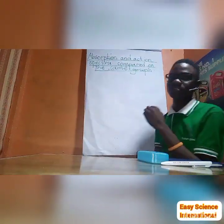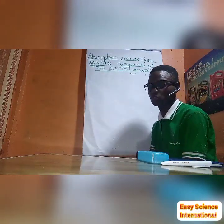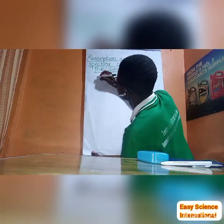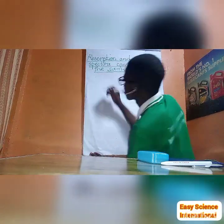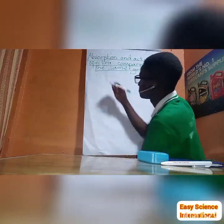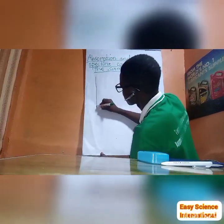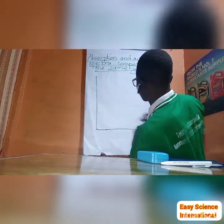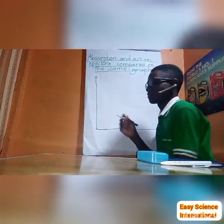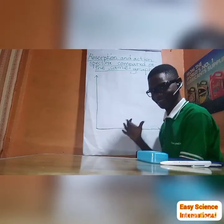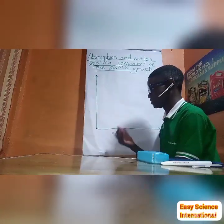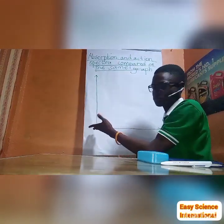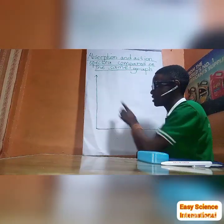We want to see what really happens when we compare these two graphs on the same graph. We shall sketch our graph. Make sure you use a ruler while drawing these axes. The graph books are always demarcated, but make sure you use your pencil — basically pencil to show us the main axes.